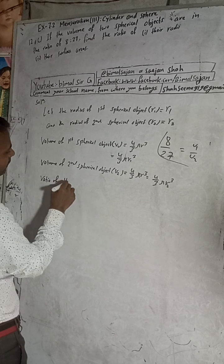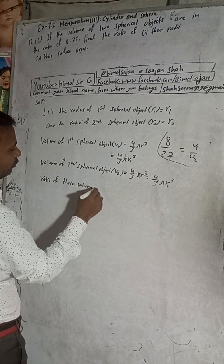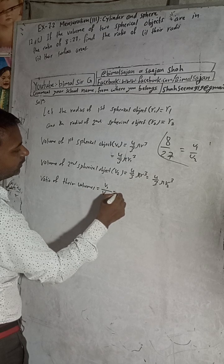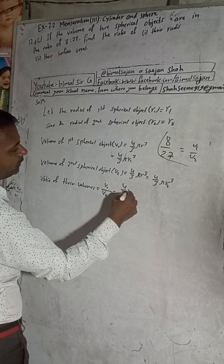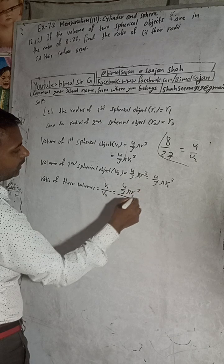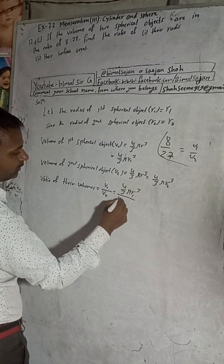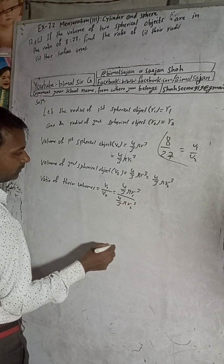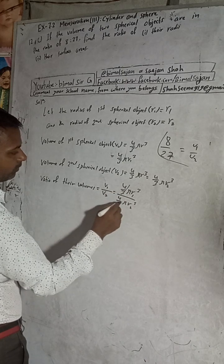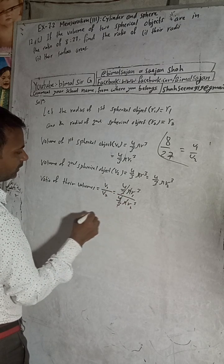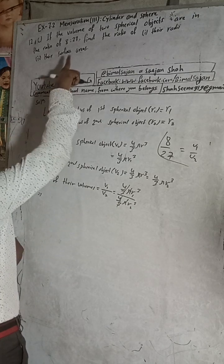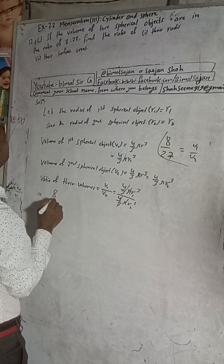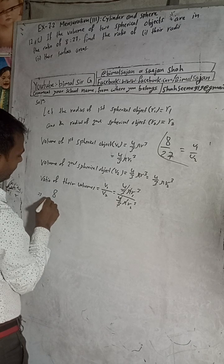The ratio of the volumes is given as V1 by V2, that means 4 by 3 pi R1 cubed divided by 4 by 3 pi R2 cubed. The 4 by 3 and pi cancel out. The ratio of the volumes is given as 8 by 27, so we get R1 cubed by R2 cubed equals 8 by 27.